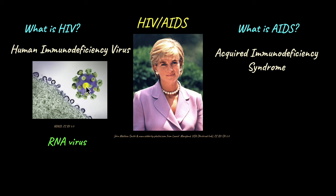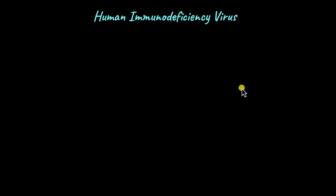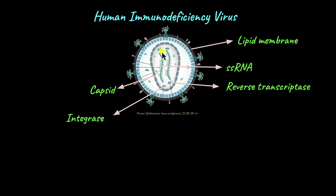How does HIV cause AIDS? Because this is a viral infection, how does the infection transform into a syndrome? First, we will take a look at the virus itself. The virus is a simple RNA virus. It has two strands of single-stranded RNA. It is covered by the protein capsid and the lipid membrane surrounding it. Within the protein capsid, there are two important proteins needed for the replication of this virus: one is known as reverse transcriptase and the other is integrase.